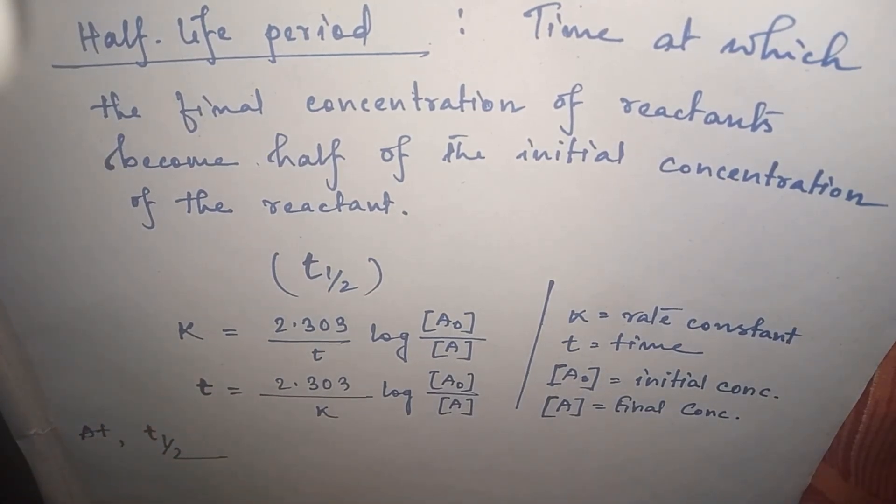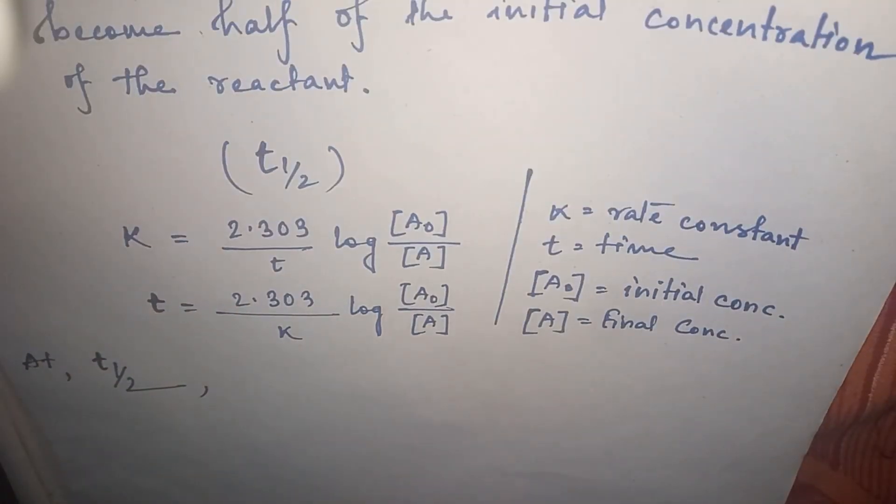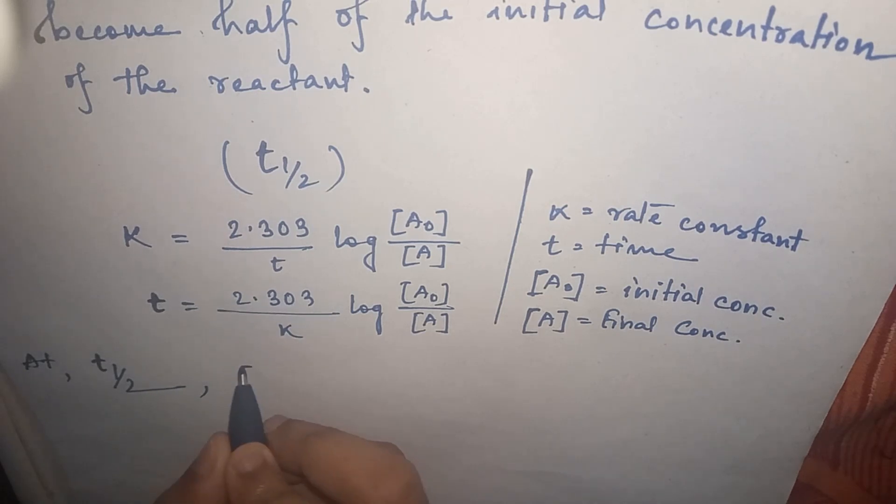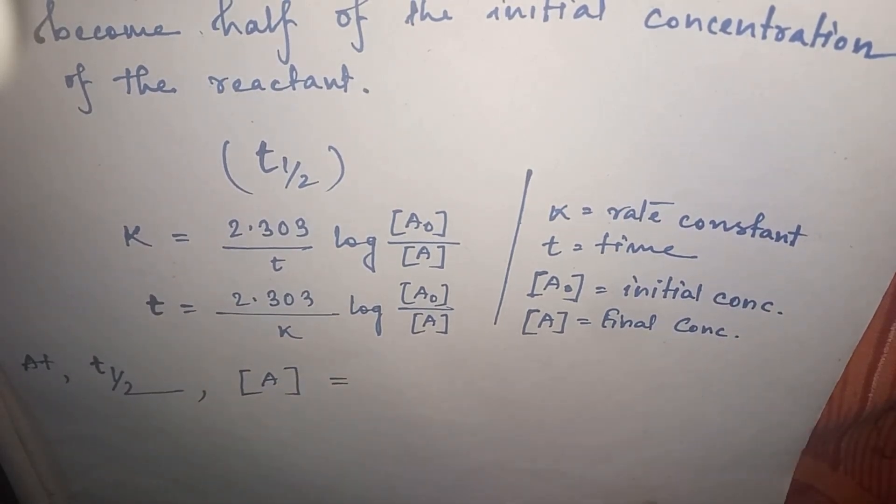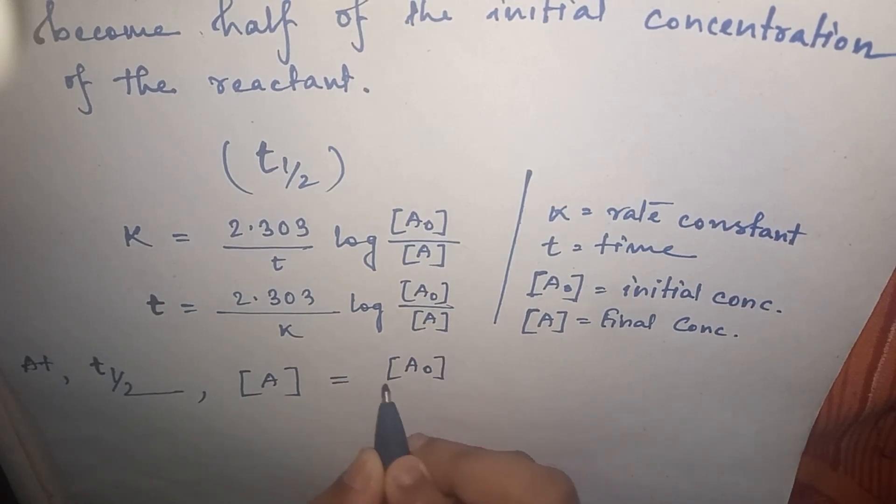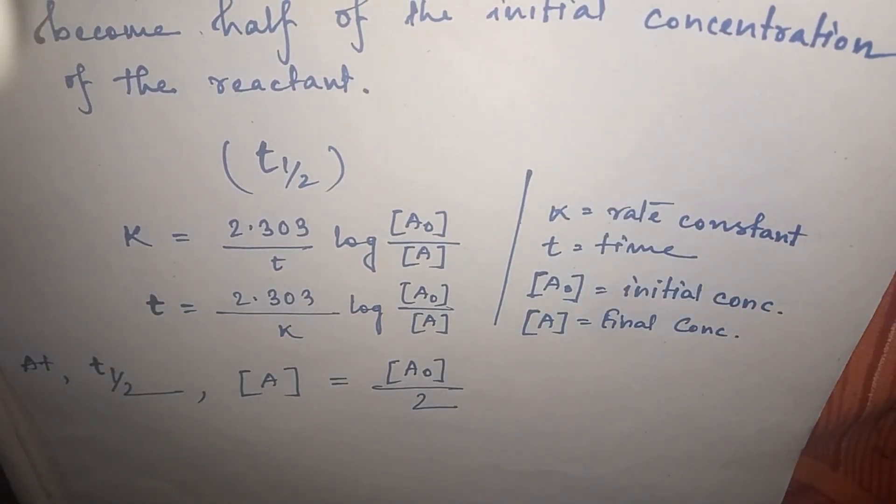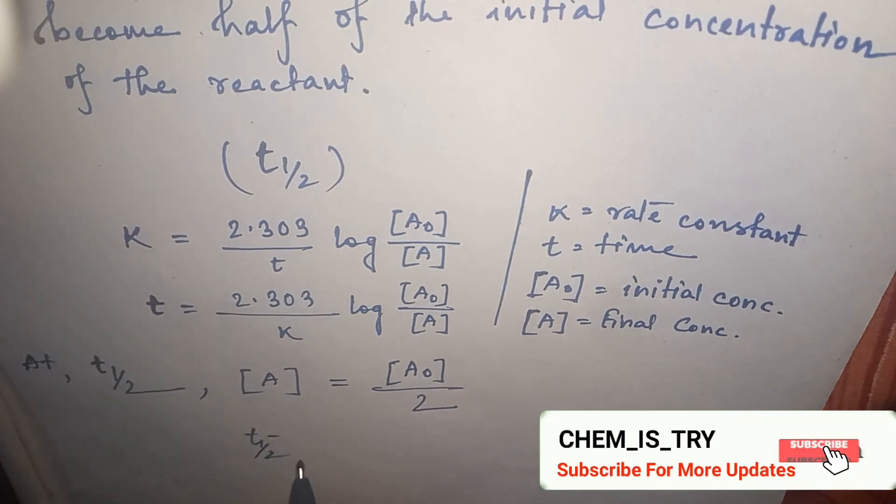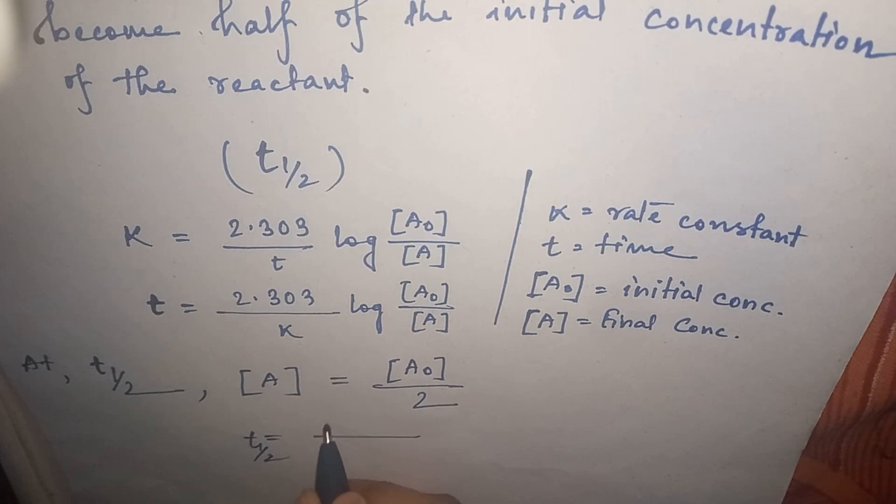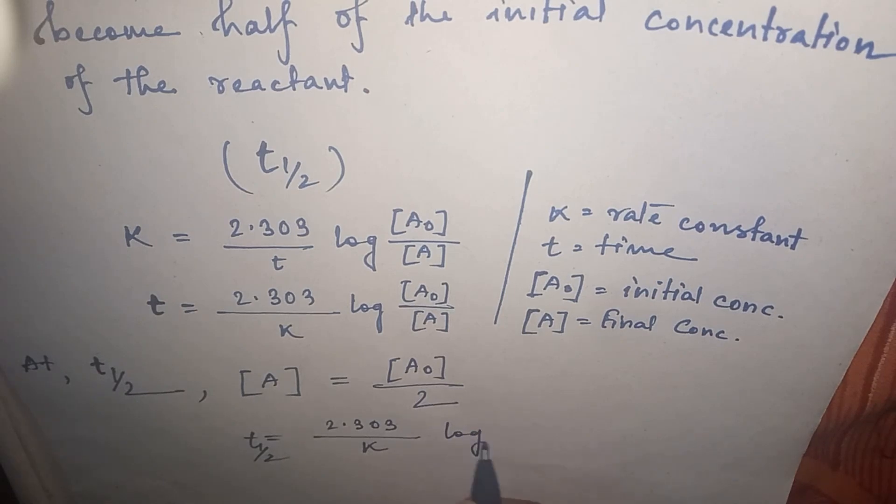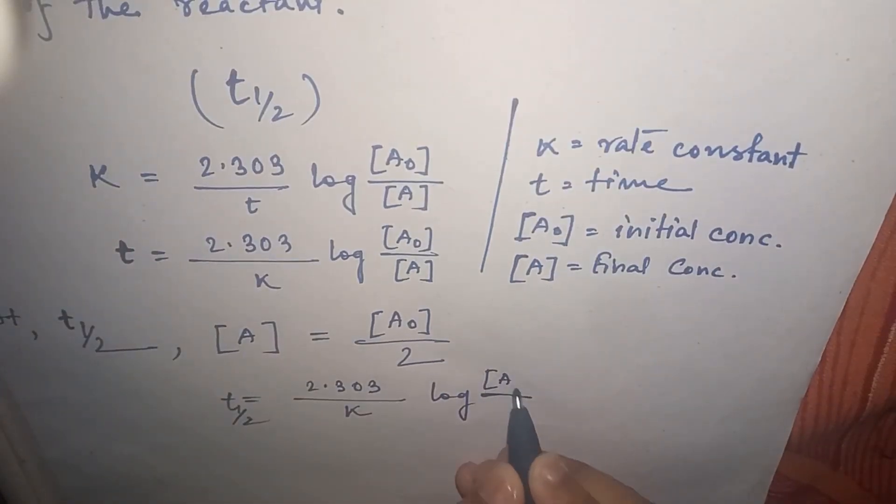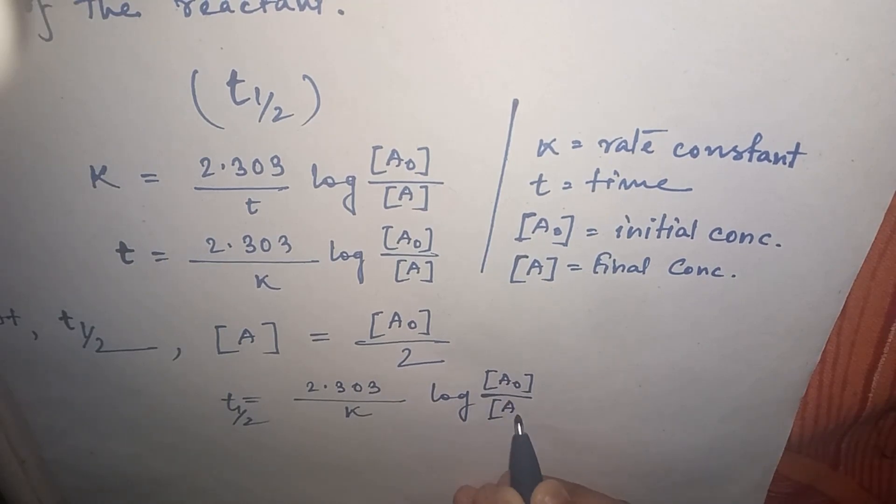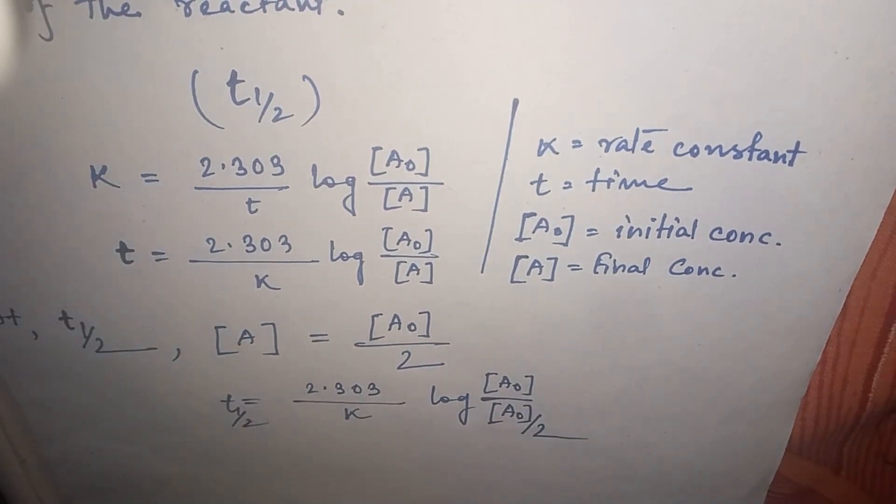When it is T half, then the final concentration will be half of the initial concentration as per the definition. So now let's put this value into the formula: T half equals 2.303 by K log [A₀] upon [A₀] by 2.